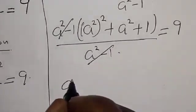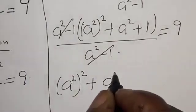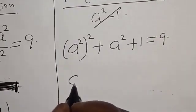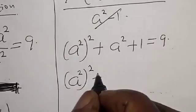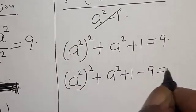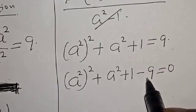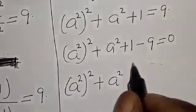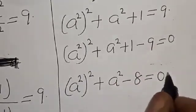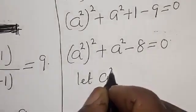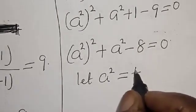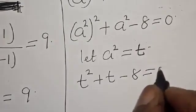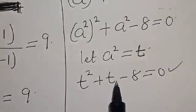The (a squared minus 1) terms cancel. We have a⁴ plus a² plus 1 is equal to 9. Let's equate everything to zero: a⁴ plus a² plus 1 minus 9 equals 0, which gives us a⁴ plus a² minus 8 equals 0. Now let a squared equal t. Then we have t squared plus t minus 8 equals 0. This is a quadratic equation and can be solved using the quadratic formula.